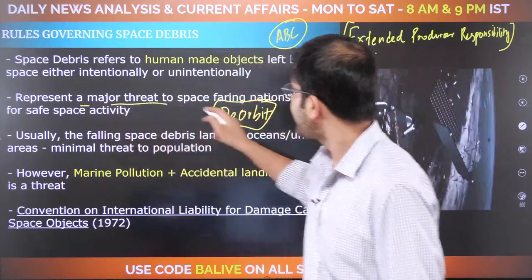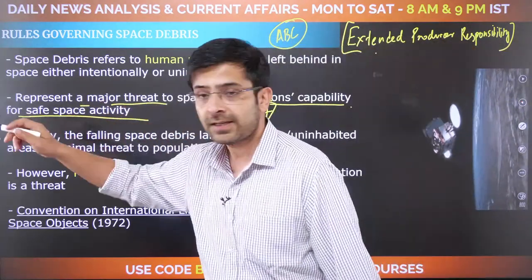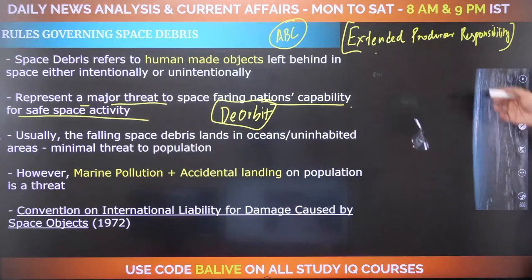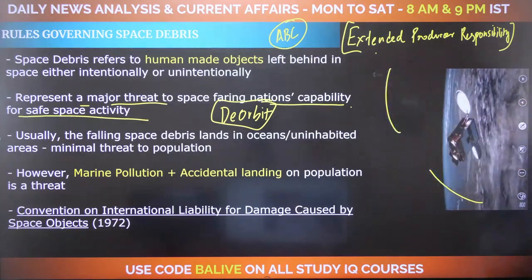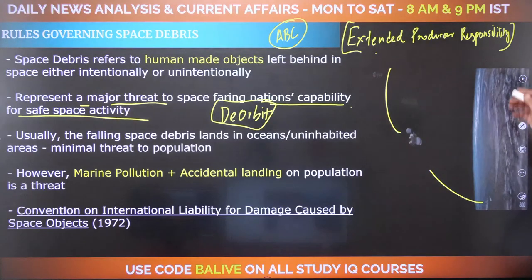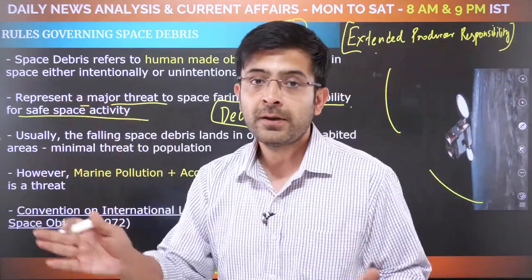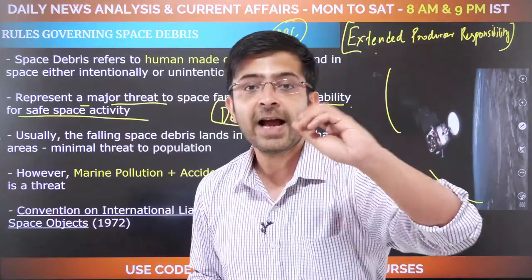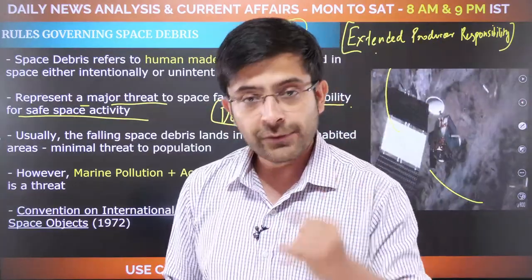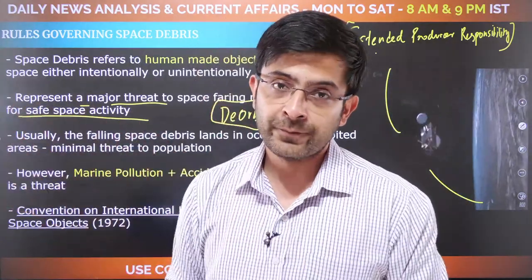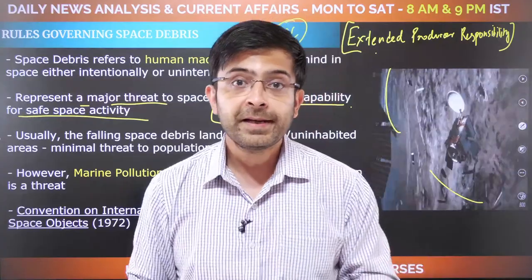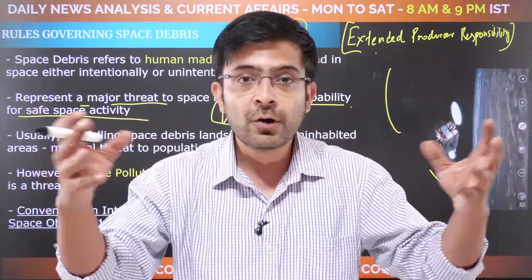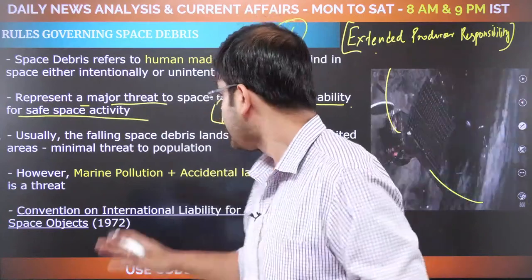Space debris represents a major threat to spacefaring nations' capability to safely conduct space activity. A foreign object at altitude moving at high velocity can cause structural damage and throw a mission off course. The International Space Station operates a ballistic shield mechanism to protect against small space debris. Falling space debris normally lands in oceans or uninhabited areas, as multi-stage rockets are designed to shed components over empty ocean or desert areas.